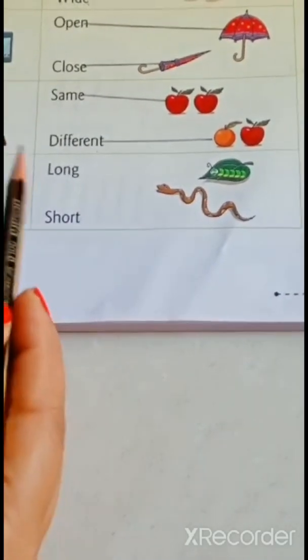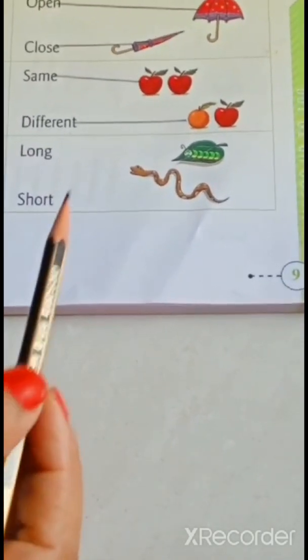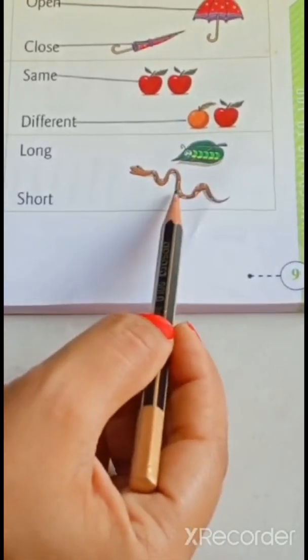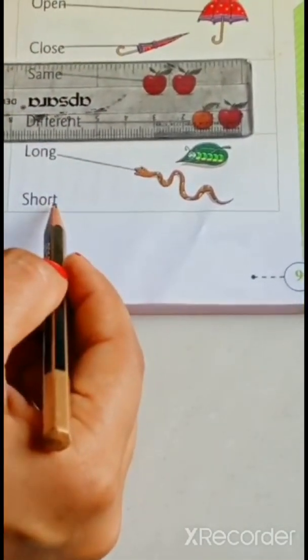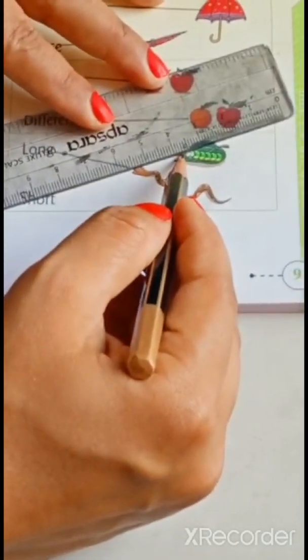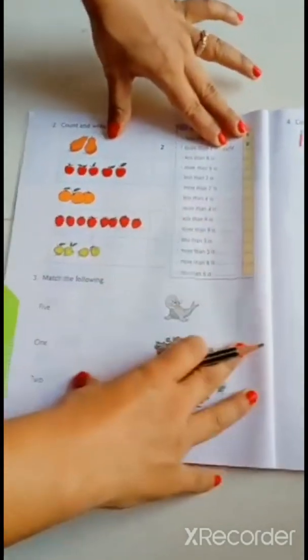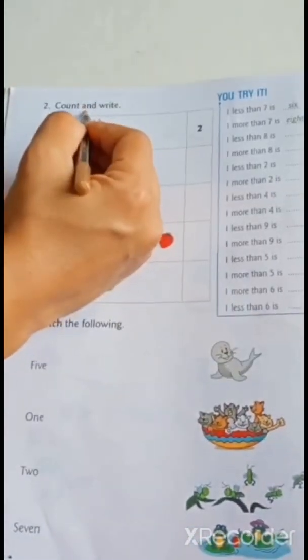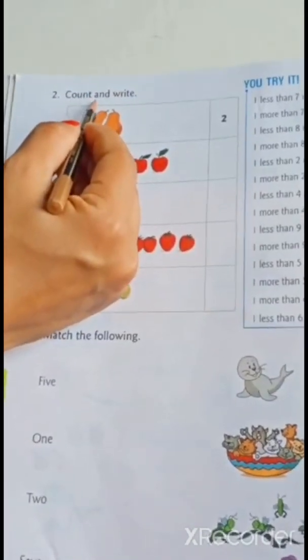Now, next. L-O-N-G long and S-H-O-R-T short. Now, this snack is long or caterpillar is long. This one. So, join L-O-N-G long with snack and S-H-O-R-T short with caterpillar like this. Now, turn your face. Please. Question number 2. C-O-U-N-T count. A-N-D and W-R-I-T-E write. Count and write.